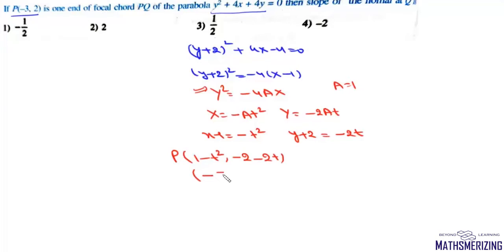Now we'll compare it with this given point which is minus 3 comma 2. Then from the first one we'll get 1 minus t square equals minus 3 so value of t is plus or minus 2. And we'll compare the second one we'll get 2t equals minus 4 value of t is minus 2. So that means for this point P the value of parameter t is minus 2.